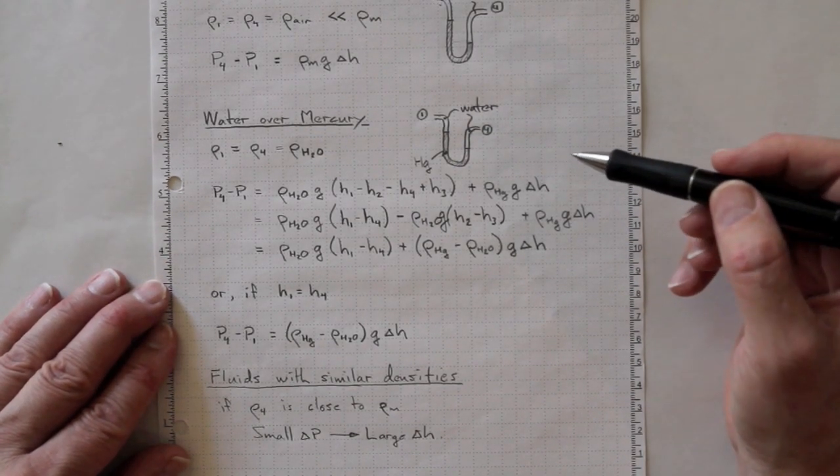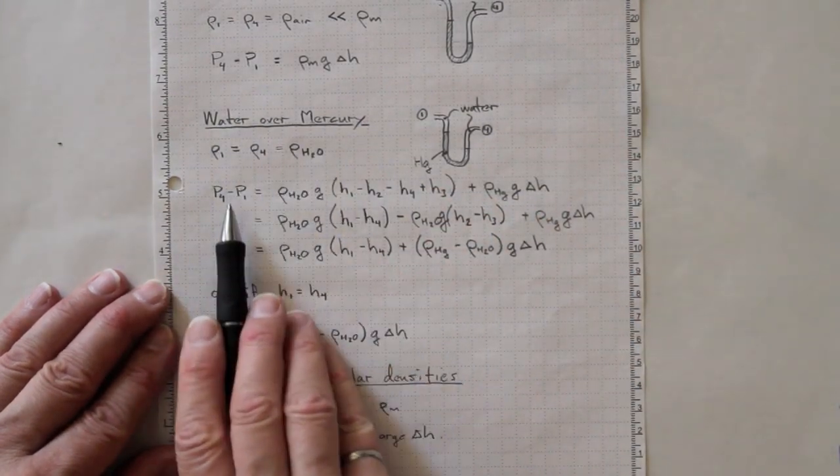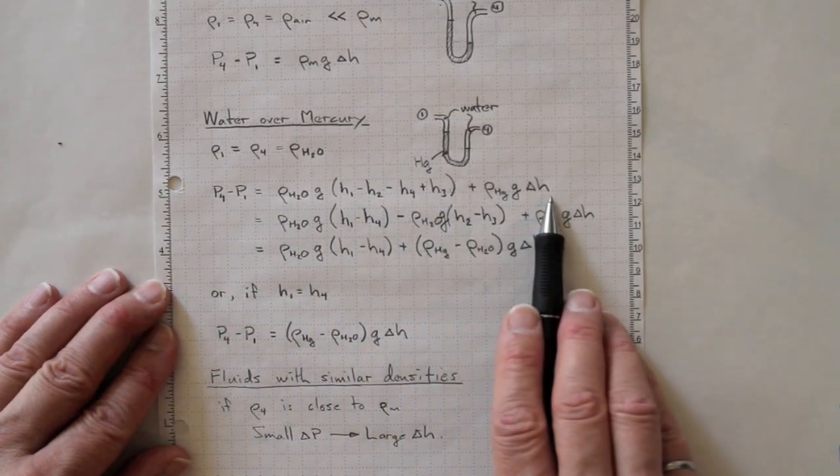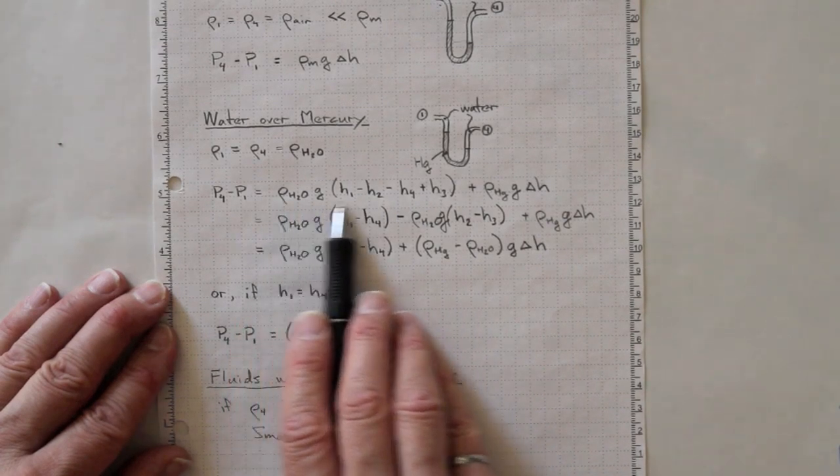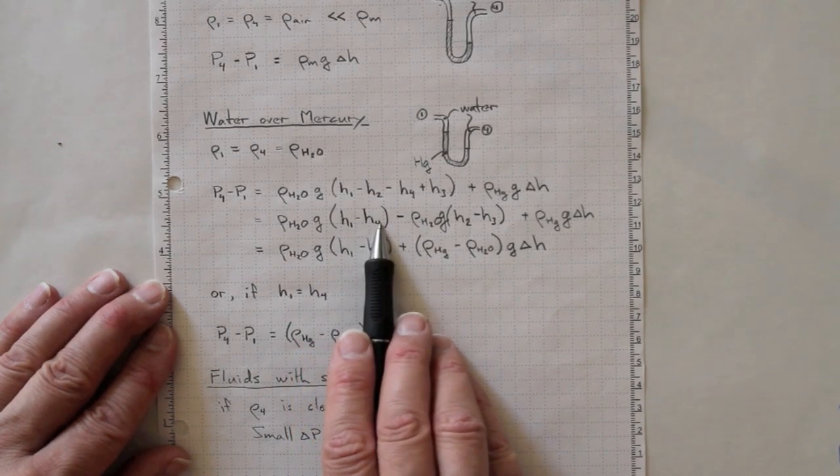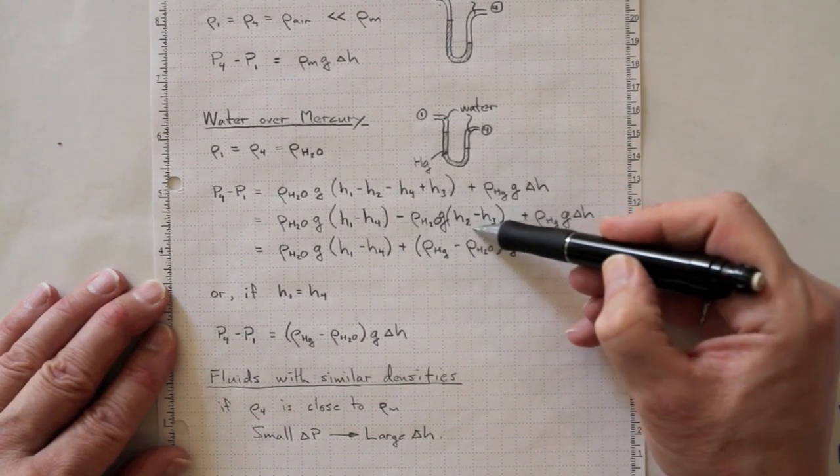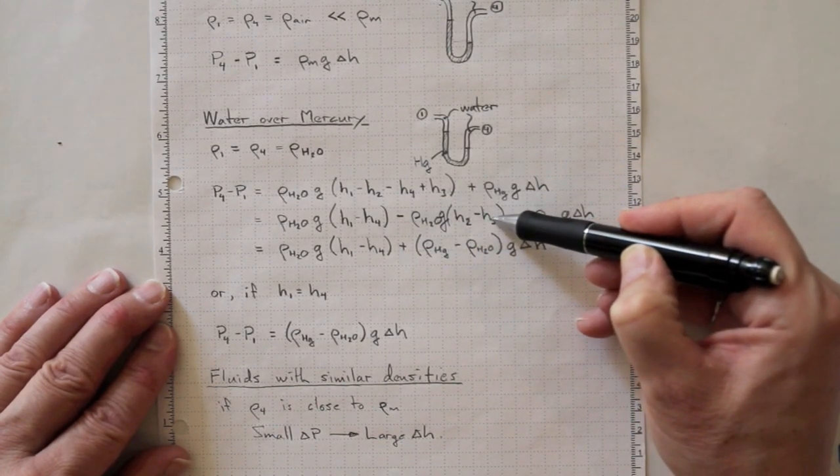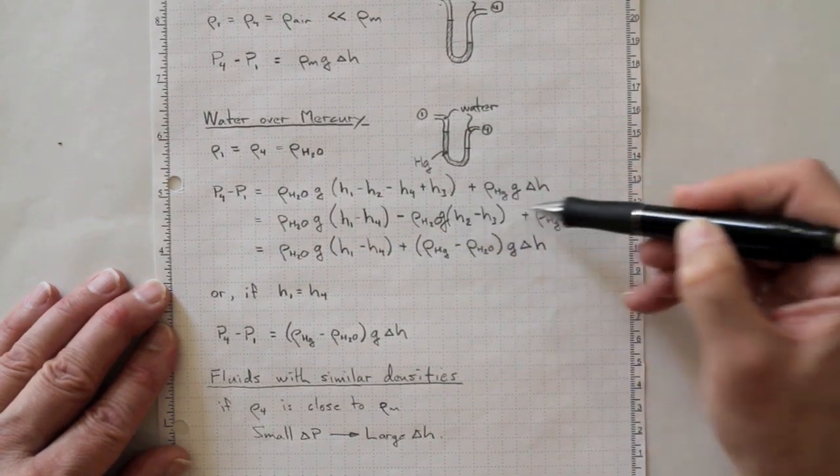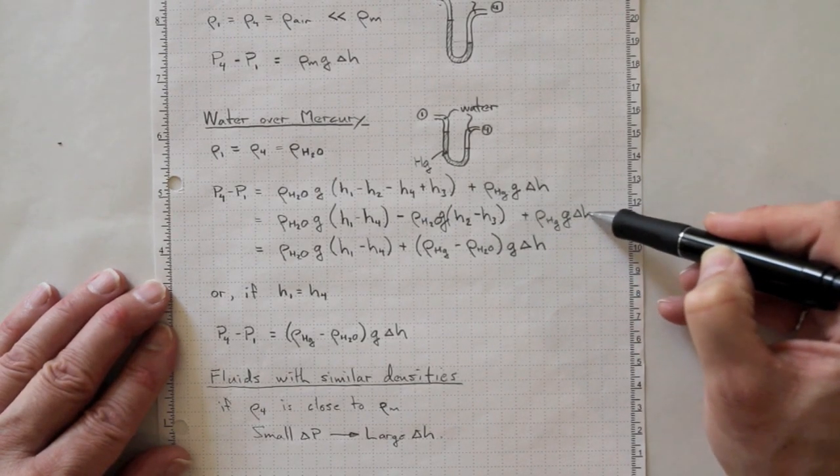Let's try that again. For water over mercury, the densities are the same, so we can still write the P4 minus P1 equation, following the same way, and group the water legs together. If we arrange that this way, we can look at H1 minus H4, the difference in height between those two locations, and then H2 minus H3, the difference in height between those two locations for the water. Then we also have rho Hg times G delta H.